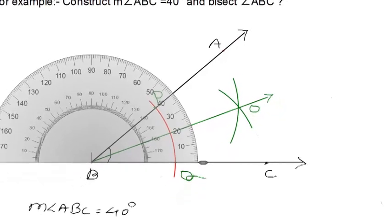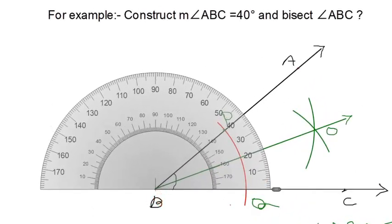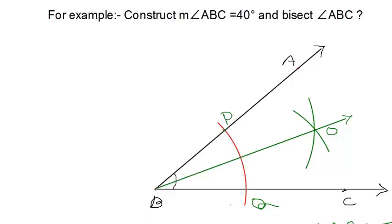Measure of angle ABO is equal to what? And measure of angle CBO is equal to what? We know that measure of angle ABO is equal to 20 degree. Therefore, measure of angle CBO is equal to 20 degree. And also, measure of remaining angle is 20 degree. This is the required angle ABC which measures 40 degree. And ray BO is the bisector of angle ABC.